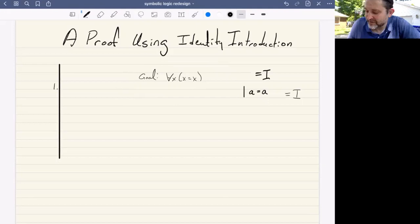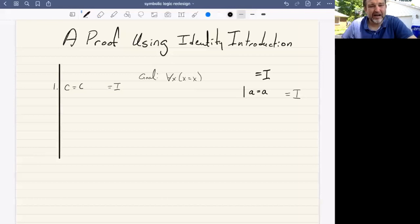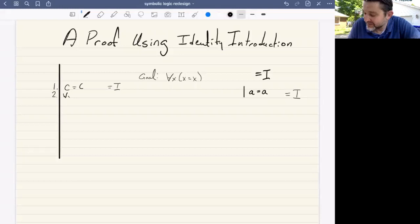We can assert that C is identical to itself using identity introduction. And then using our universal introduction rule, we can assert that for all things X, X is identical to X, citing universal introduction and step one.